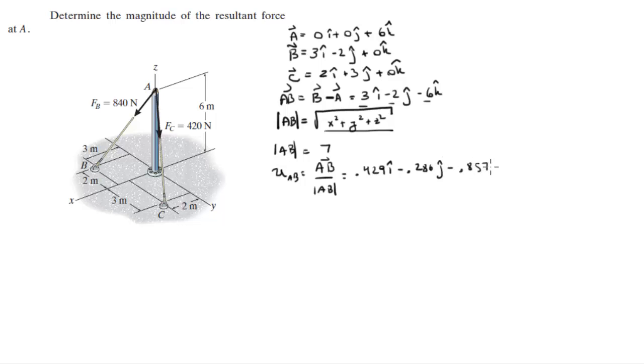With the unit vector, you can now find the Cartesian vector form of this force by multiplying the magnitude of FB, which is 840. So you multiply the magnitude by the unit vector AB and you get the Cartesian vector form of AB.